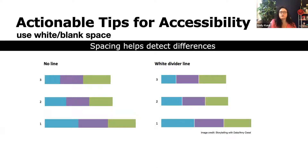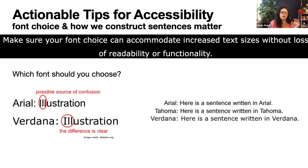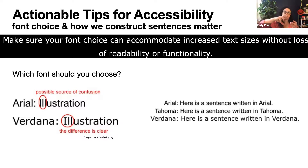Use white or blank space — what spacing does is help detect differences. You can see this example, credit to Storytelling with Data and Amy Cecil, where there's no line, and then there's a white divider line that can help you see differences. Make sure the font choice can accommodate increased text sizes without loss of readability. We should be able to zoom up to 200% without losing readability.